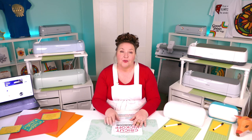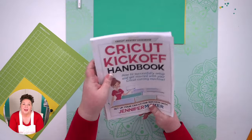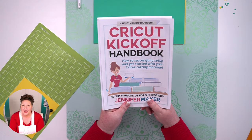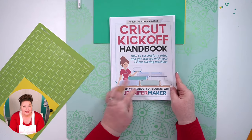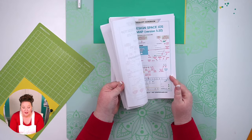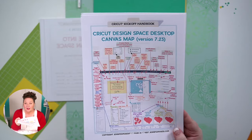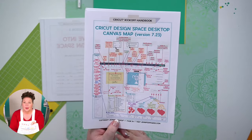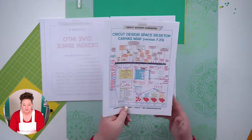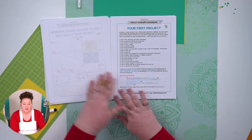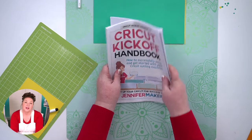Before we get too far, I want to remind you about my free and updated Cricut Kickoff Principle Handbook. The Cricut Kickoff Handbook goes along with all of these lessons. You can download it right now at CricutKickoff.com — just register for the class, which is free, and you'll get the handbook. It includes an awesome map that has every single thing on the canvas marked, with little cheat notes about what things do. It's a great thing to keep near your computer as you're working. The step-by-step project instructions are also all in there.